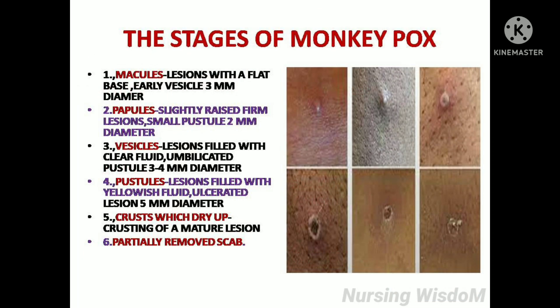Macules: lesions with a flat base, early vesicles, approximately 3 mm in diameter. Papules: slightly raised firm lesions with small pustules, 2 mm in diameter. Vesicles: lesions filled with clear fluid, 3 to 4 mm in diameter. Pustules: lesions filled with yellowish fluid, ulcerated lesions, 5 mm in diameter.